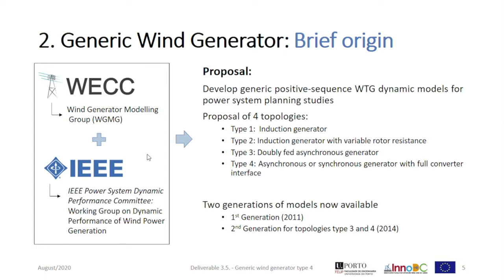They came up with a proposal of four topologies: Type 1, induction generator; Type 2, induction generator with variable rotor resistance; Type 3, doubly fed asynchronous generator; and Type 4, a synchronous or asynchronous generator with full converter interface.